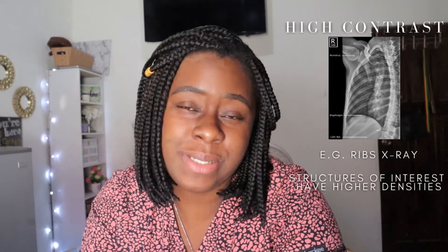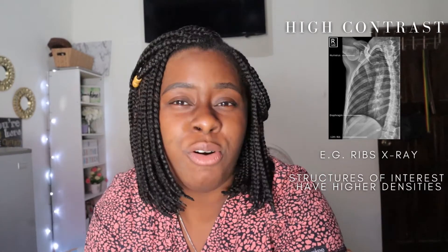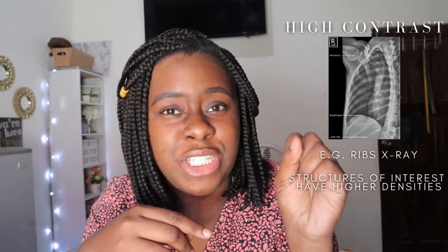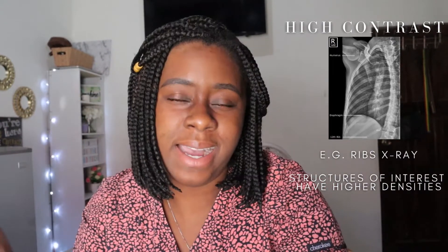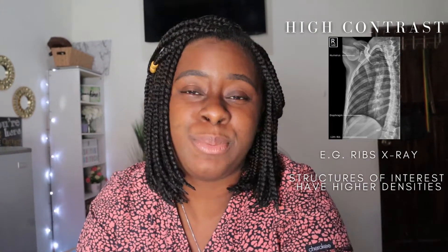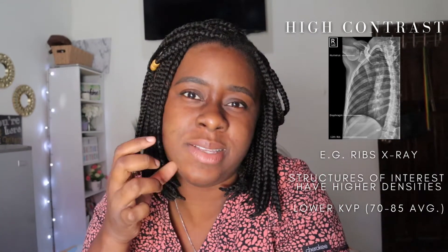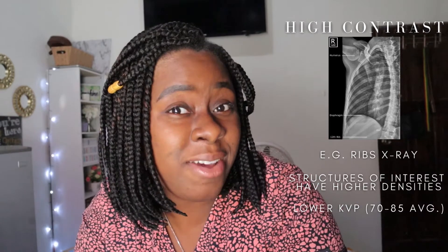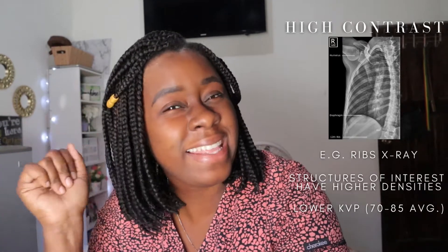In contrast — see what I did there — when we look at a rib x-ray, the structures we're interested in are the ribs: the bone, the articulation, any possible discontinuity, any fracture. In order to see a break in the bone, we need to differentiate this piece of bone from that piece of bone, so we need a higher contrast image. We need a stronger difference in the lights and the darks. That's why a rib x-ray will have a lower KVP in order to achieve high contrast. So: low KVP equals high contrast, and high KVP equals low contrast.